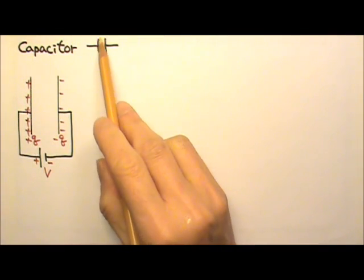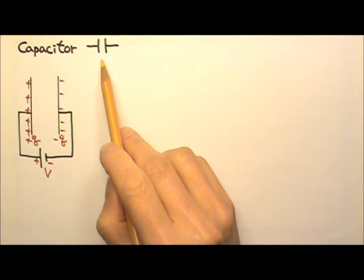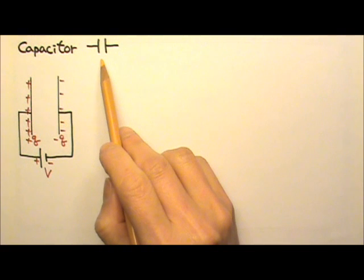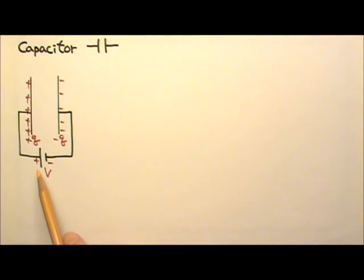When we draw capacitors in circuit diagrams, we would draw a pair of parallel plates like these. Note that these two lines have the same length, unlike a battery with one long line for the positive terminal and one short line for the negative terminal.